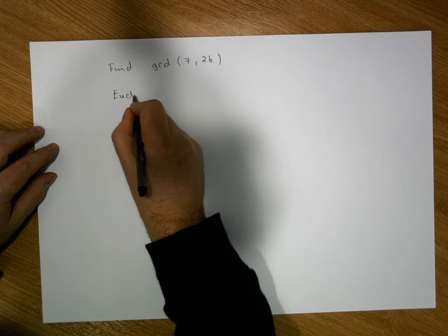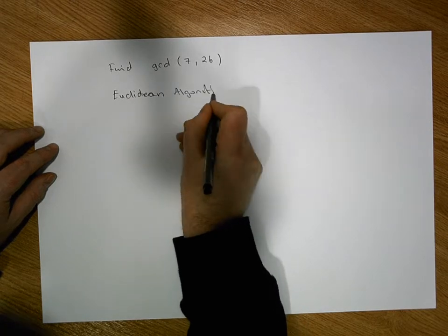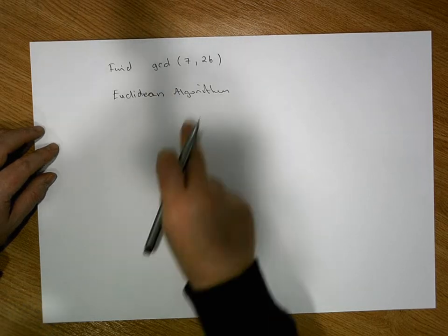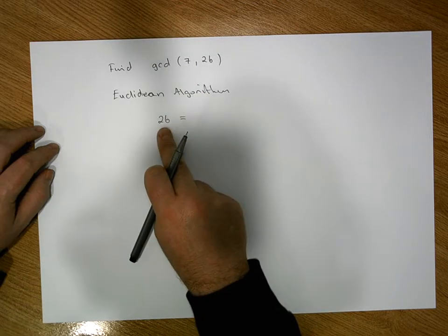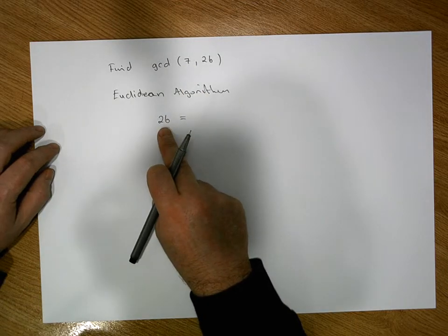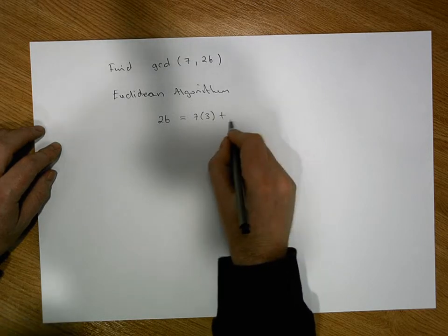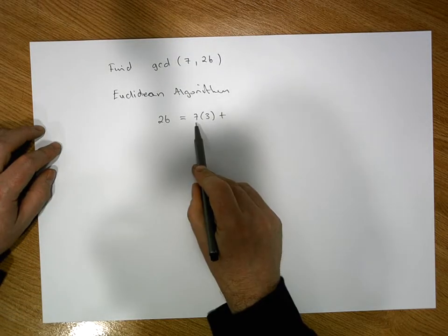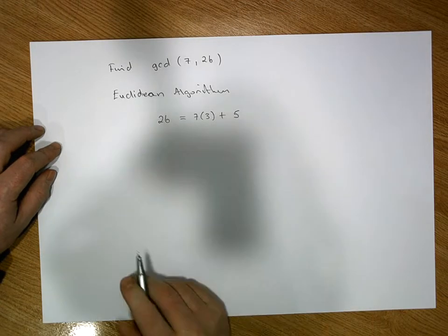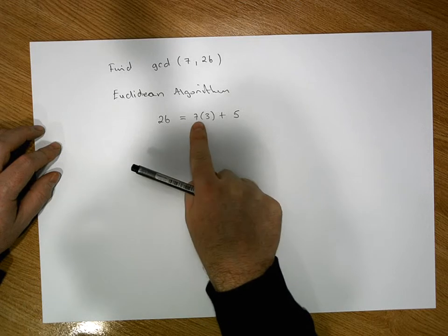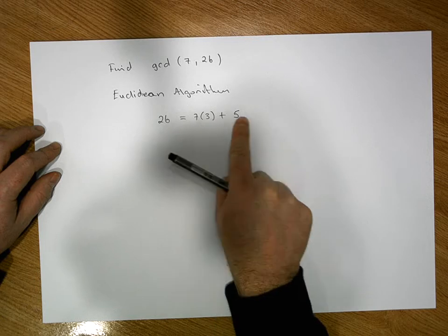Applying the Euclidean algorithm: we take the largest number. 26 is equal to — well, how many times does 7 divide into 26? 7 goes into 26 three times, so it must be equal to 7 times 3 plus some remainder. 3 sevens is 21, and 26 minus 21 gives us 5. So 26 is equal to 7 times 3 plus 5.